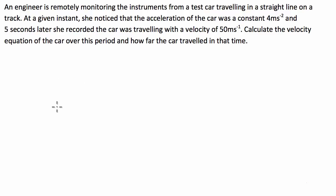We've got an engineer who is remotely monitoring the instruments from a test car travelling in a straight line on a track. At a given instant, she noticed that the acceleration of the car was a constant 4 metres per second squared. And 5 seconds later, she recorded the car was travelling with a velocity of 50 metres per second. Calculate the velocity equation of the car over this period and how far the car travelled in that time.